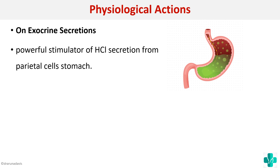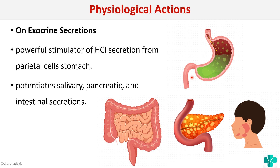Next, the action on exocrine secretion: histamine is a powerful stimulator of HCl secretion from the parietal cells of the stomach. That is why H2 receptor antagonists such as Rantac can be given for acidity problems to decrease gastric acid secretion. Histamine also potentiates salivary, pancreatic, and intestinal secretion — in general, histamine increases all secretions.